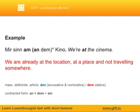Example number one: MIE GINN ON THE KINO — We are AT the cinema. Here we are already at a location, at a place, and not travelling somewhere. In this case, it's the cinema. You can see that the definite masculine article DUN has changed to DUM. We will see that later in this lesson.